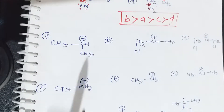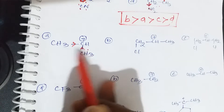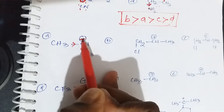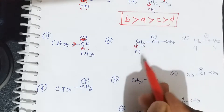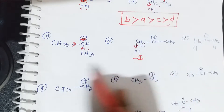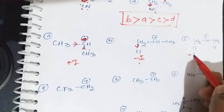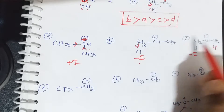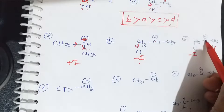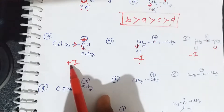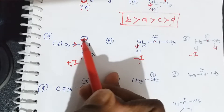Next example: the first carbocation is secondary with both plus I groups, so positive charge is slightly decreased. The second one has chlorine, which is minus I (electron withdrawing). The third carbocation has two chlorines — left side and right side — both minus I. Although all three are secondary carbocations, the number and type of substituents differ.